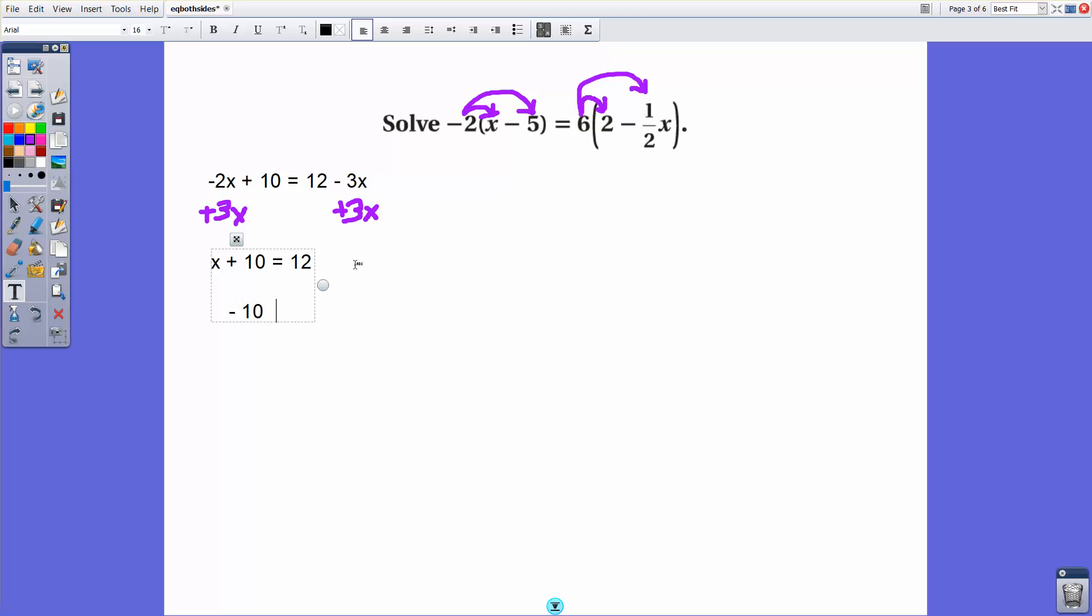If I subtract 10 over here and subtract 10 over here, that's my balancing act. X would equal 2. And of course, we check the solution, make sure it works.